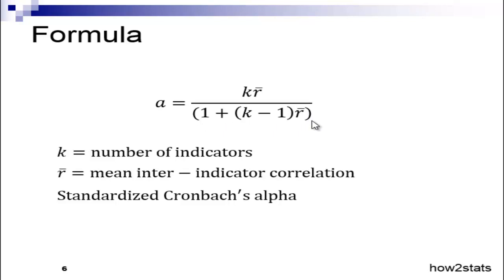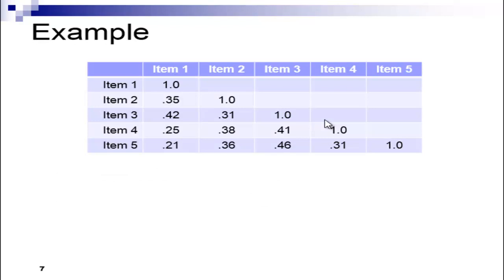Let's look at an example. I have a five-item scale. You can see the correlation between item one and item two is .35, item one and item three is .42, and all correlations are positive and small to moderate in magnitude. This is a very typical correlation matrix you might get from a five-item scale in the behavioral sciences.